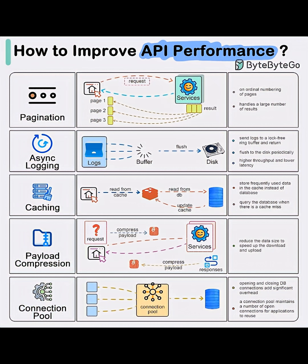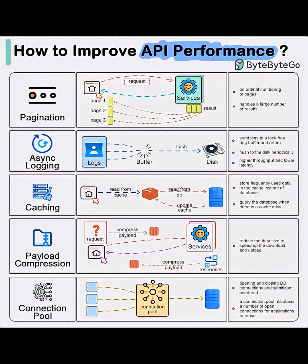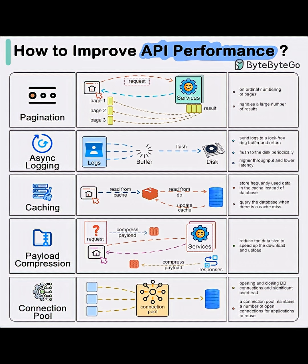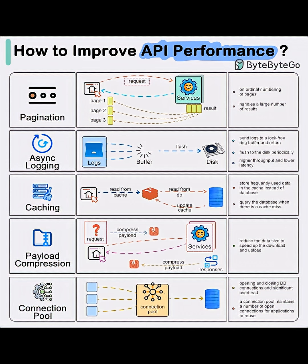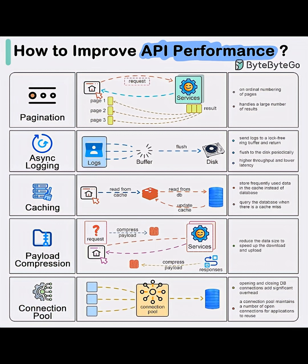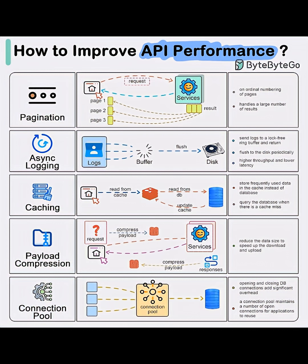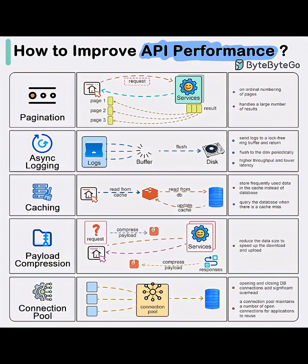2. Async Logging. Rather than writing logs directly to disk, which is slow, logs are first written to a buffer. The buffer is flushed periodically. This avoids blocking the main thread and improves performance by reducing disk I/O.